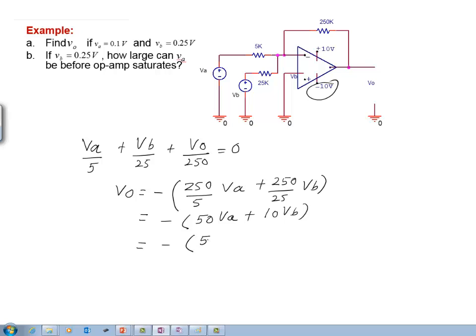If you substitute the value here, 50 times 0.1 plus 10 times 0.25. This is basically minus of 5 plus 2.5 which is equal to negative 7.5 volts. That is the answer for the first part.